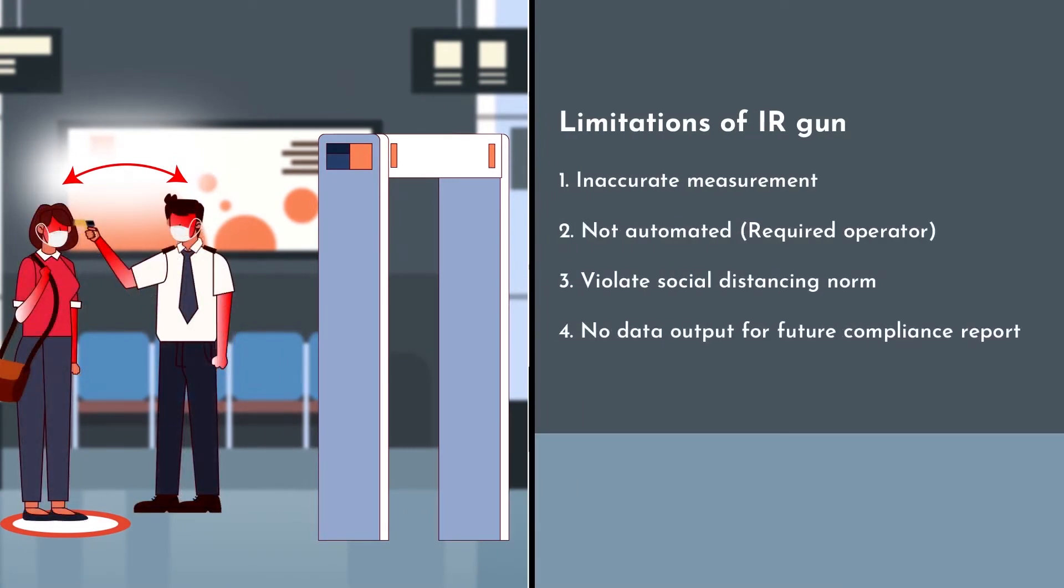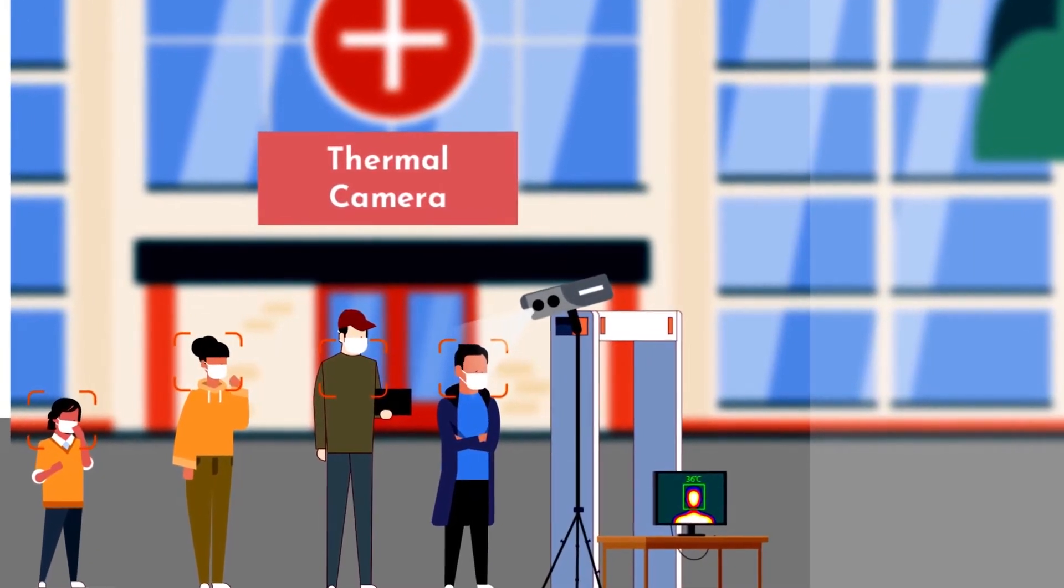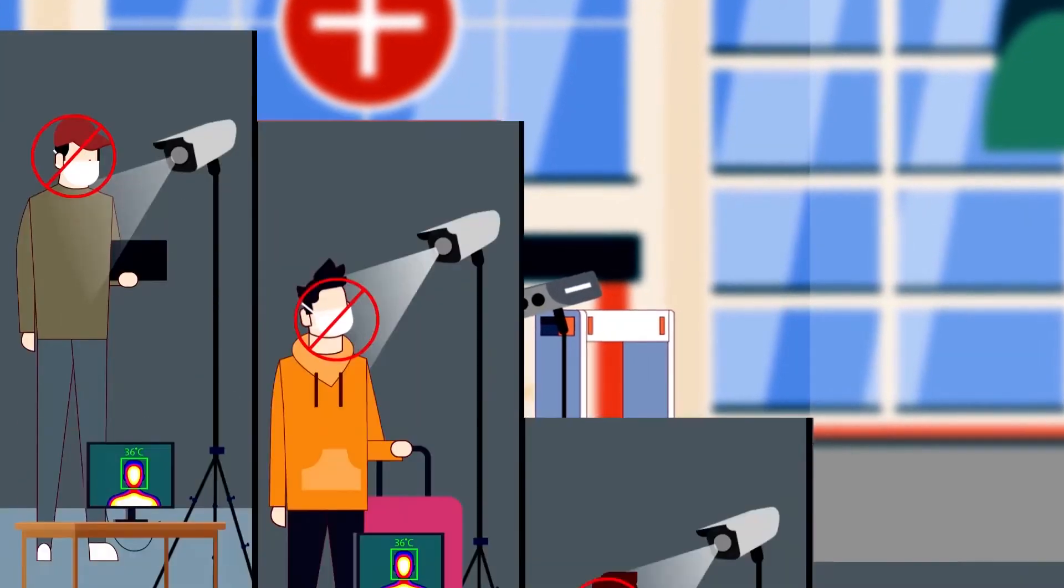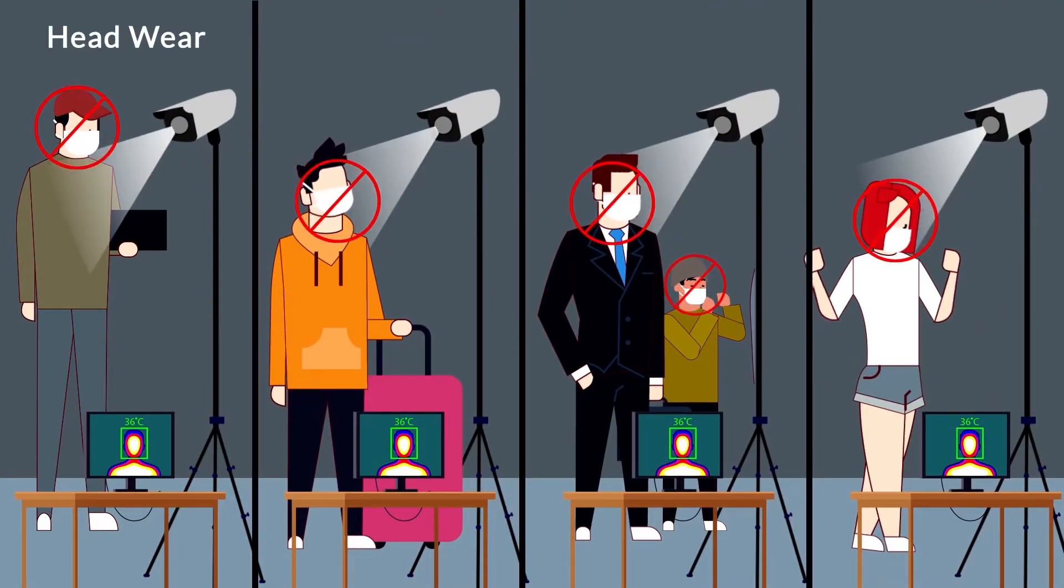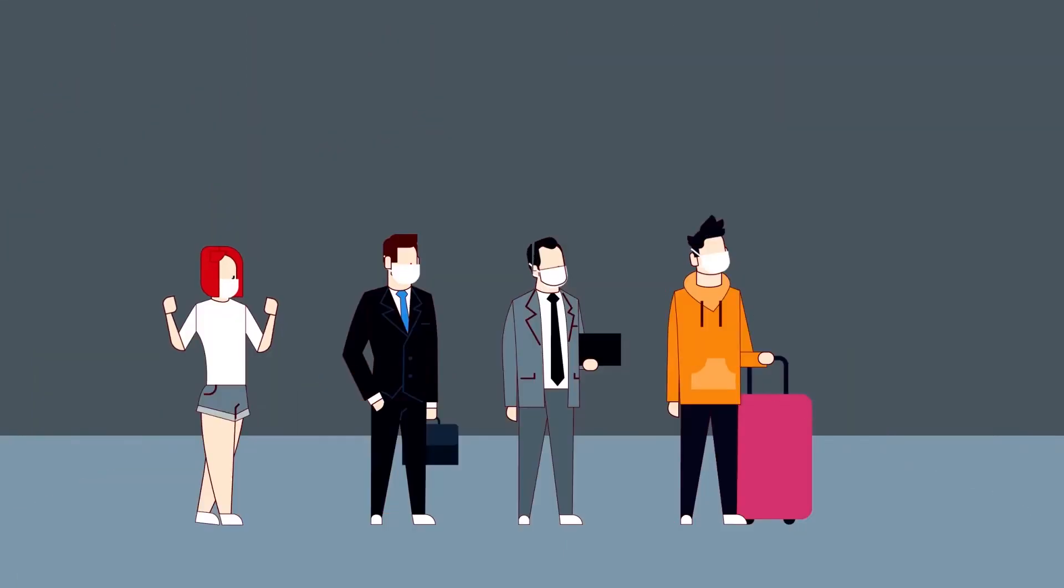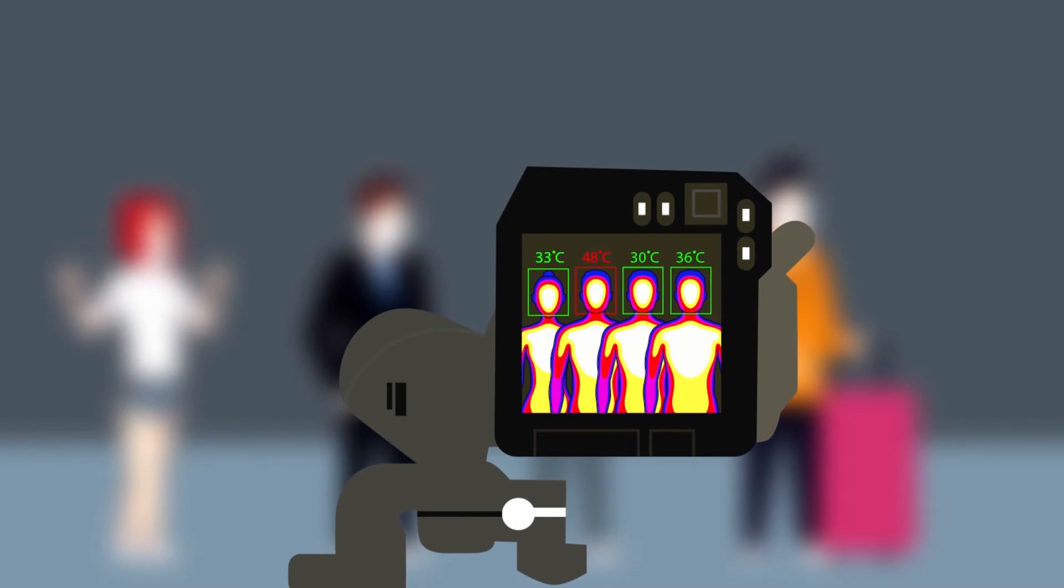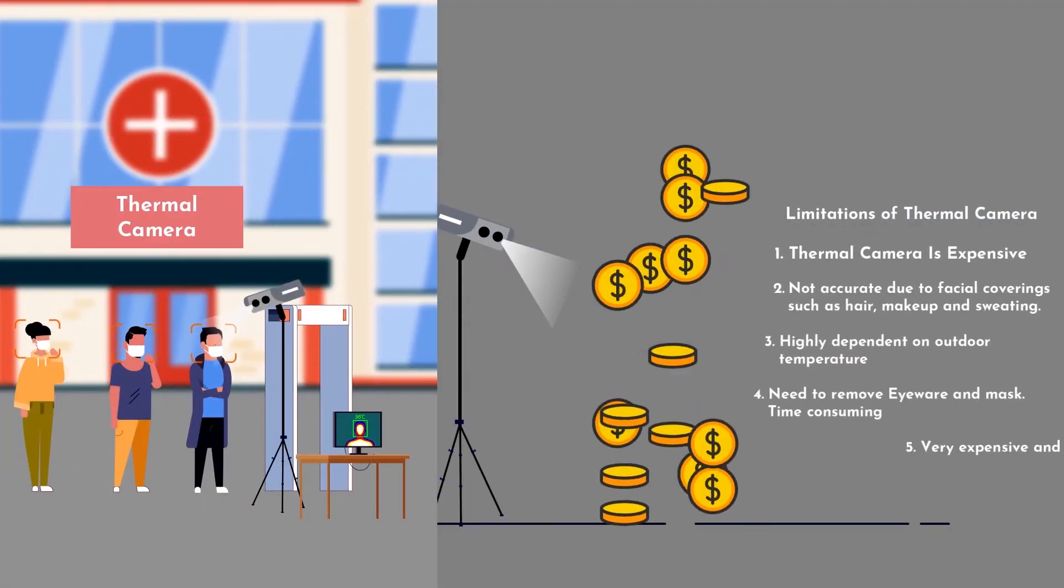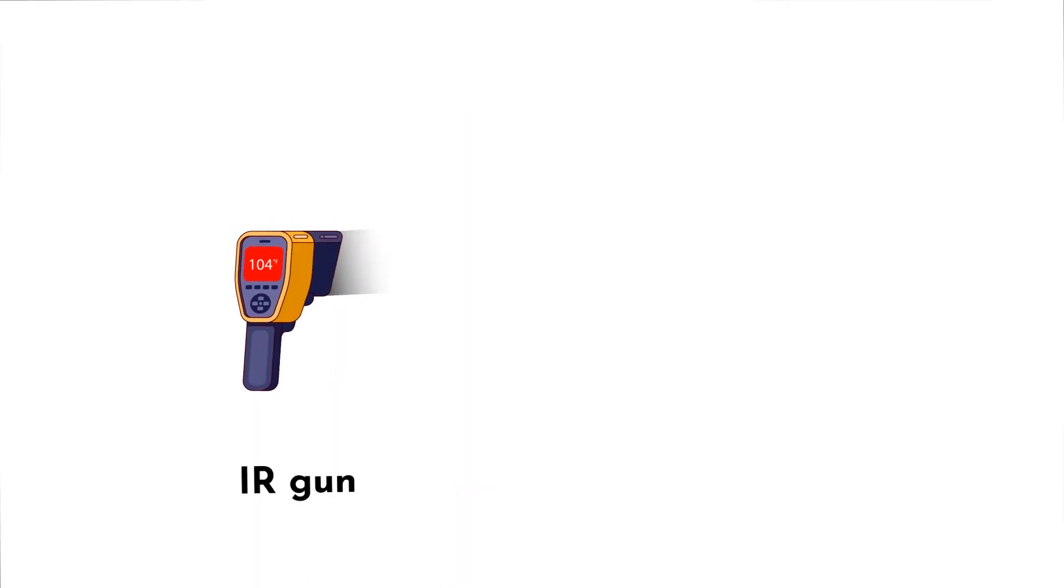The second method is the thermal camera system, which does not require someone to hold a device, but as with any infrared system, does have inaccuracies associated with headwear, perspiration, hair, and types of makeup. In addition, these thermal camera systems bring with them concerns on privacy as well, and are priced thousands more than a single handheld infrared temperature device.